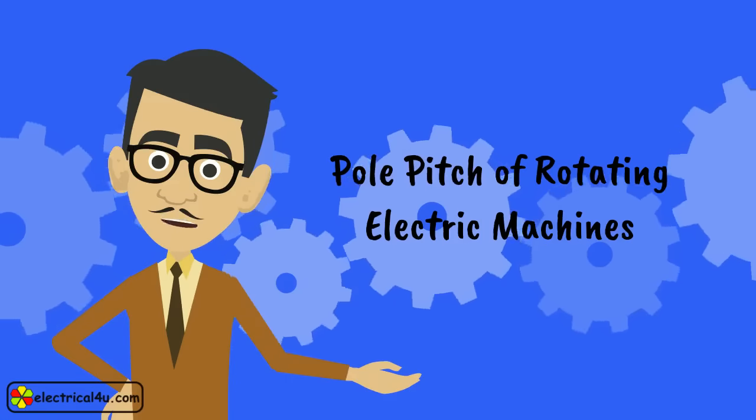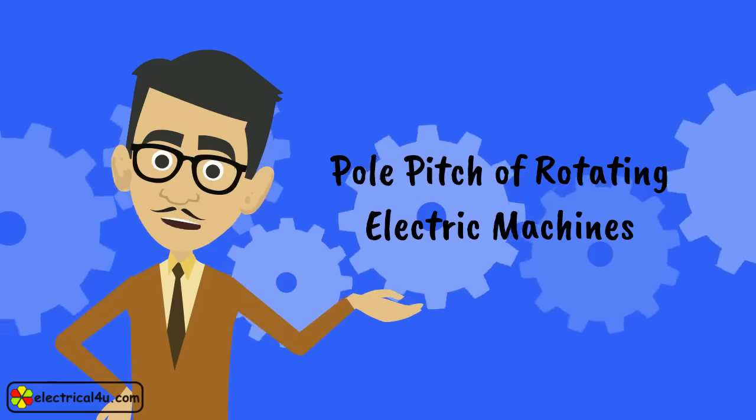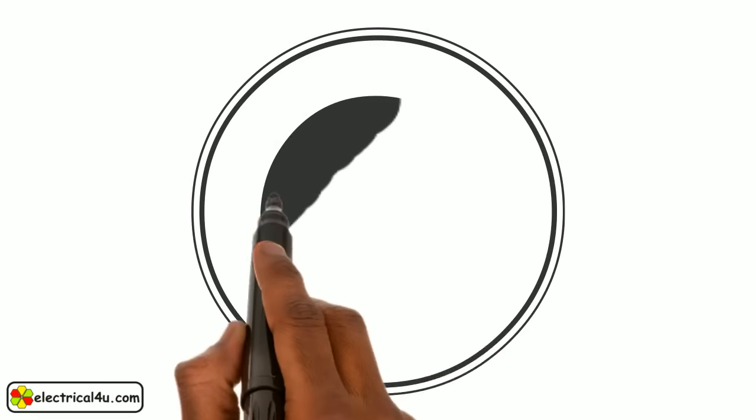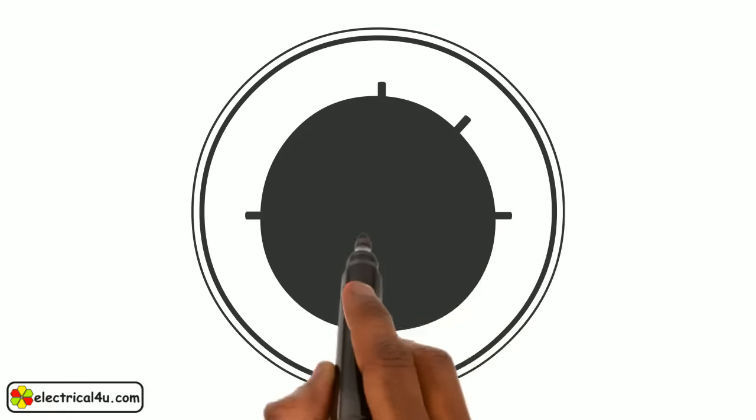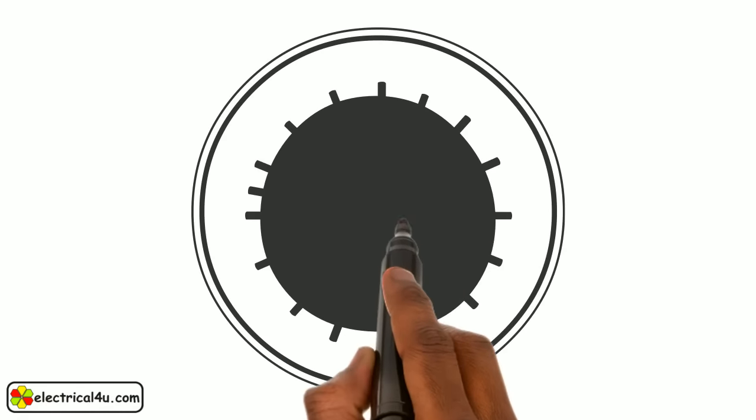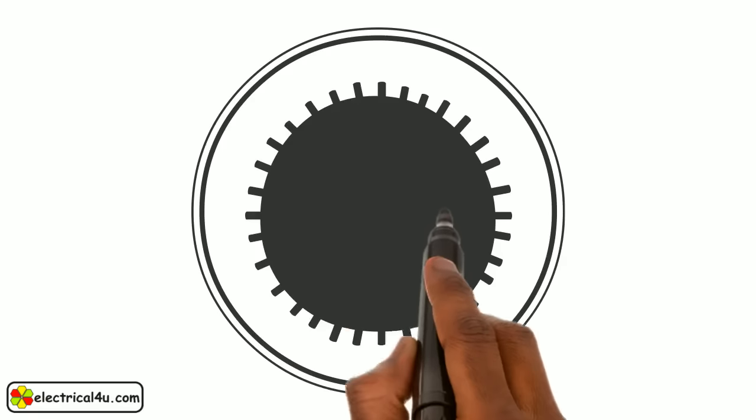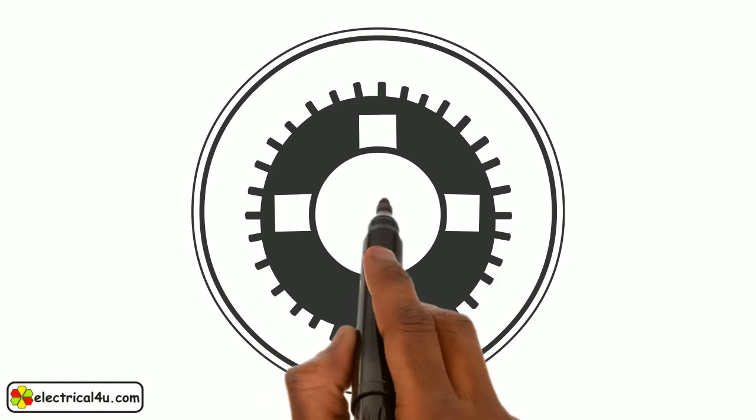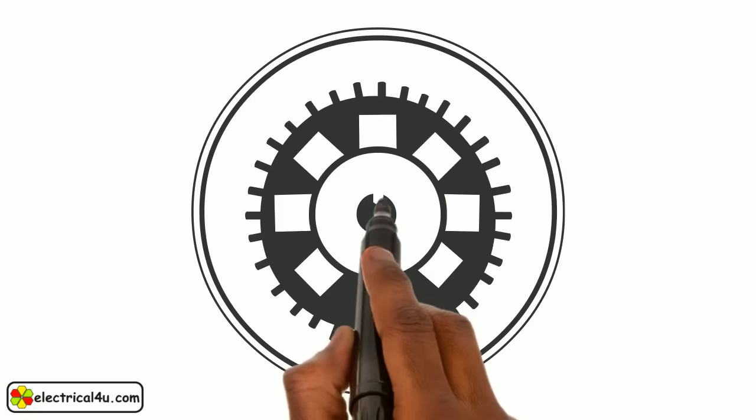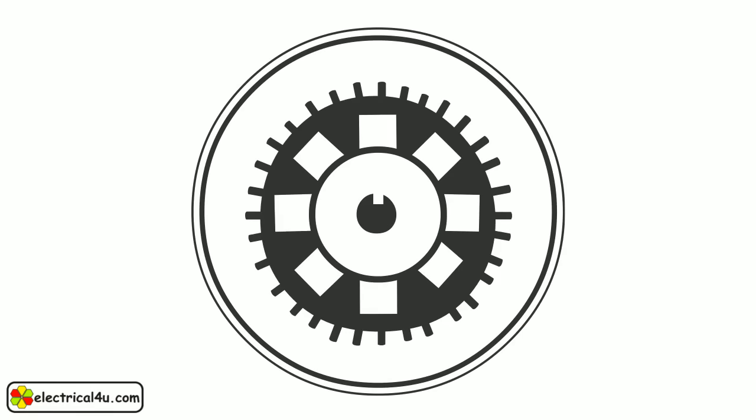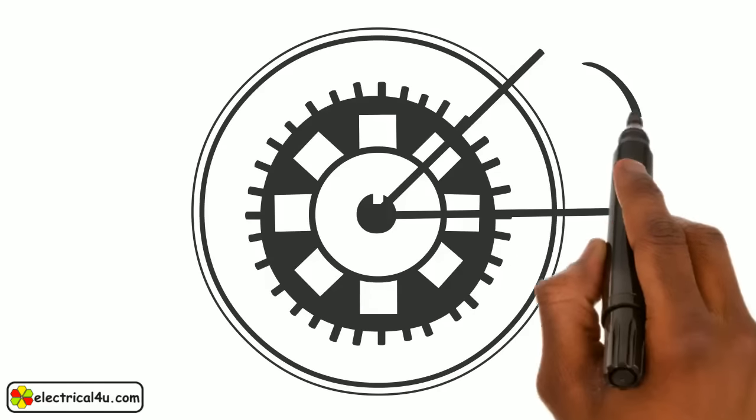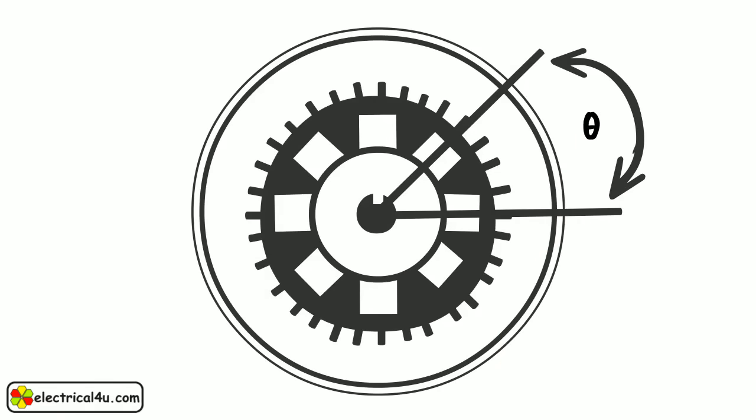Let us discuss the pole pitch of rotating electric machines. Pole pitch is the angular distance between two identical points on two consecutive poles in a rotating electrical machine. Pole pitch is expressed in electrical degrees.